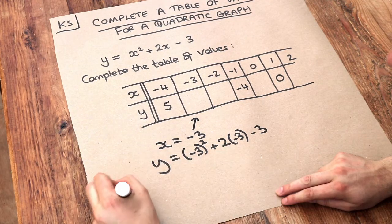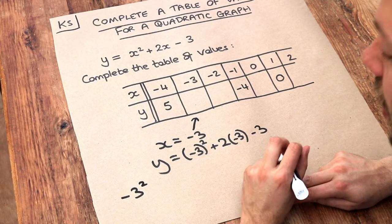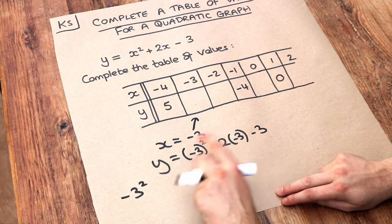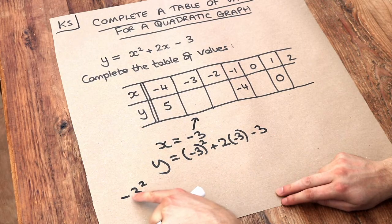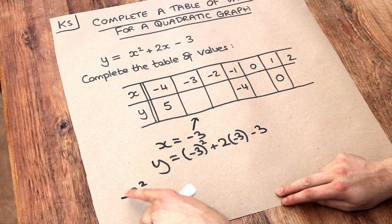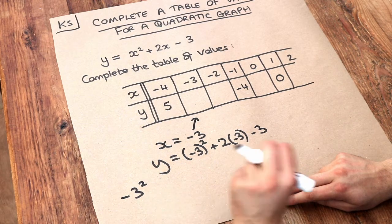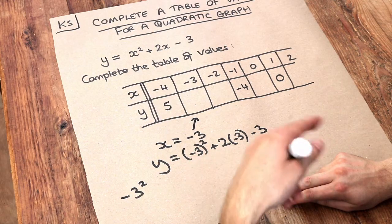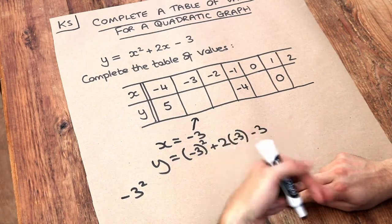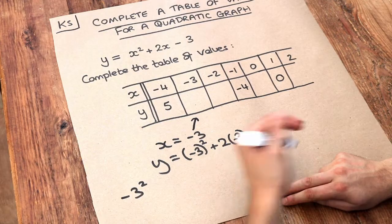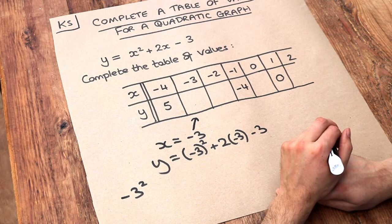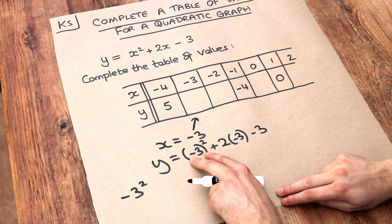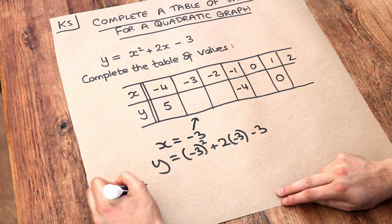The reason is, if I wrote minus 3 squared, because of BIDMAS that would actually mean 3 squared and then minus that, which is minus 9. But actually, minus 3 squared (minus 3 times minus 3) is positive 9 because negative times negative is positive. We need the brackets to ensure BIDMAS is obeyed.